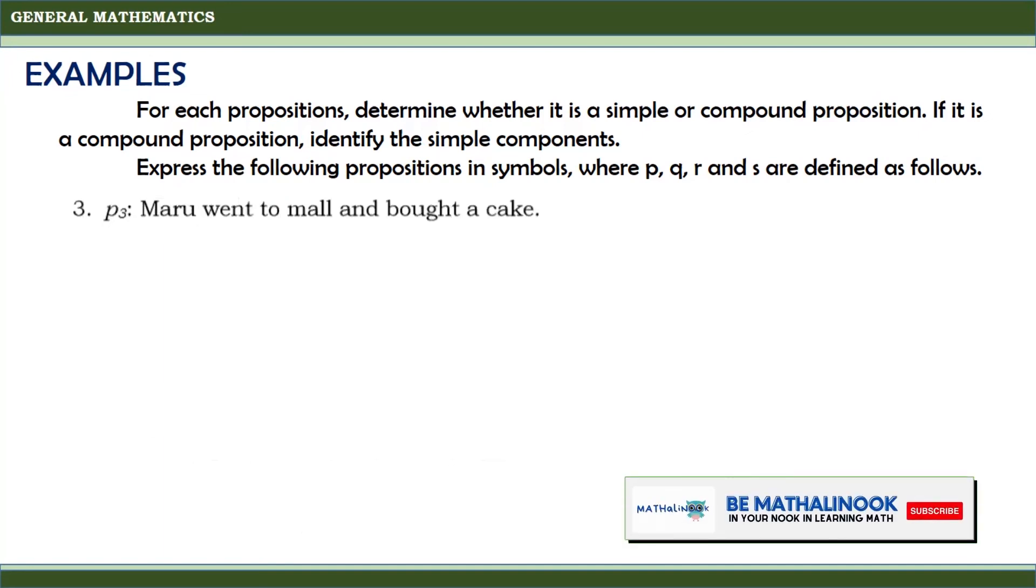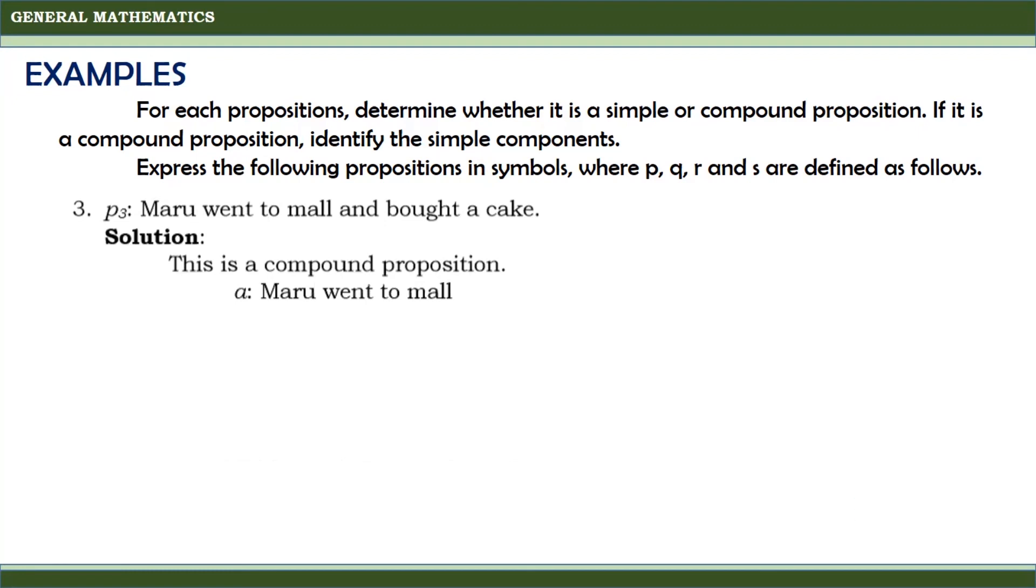Another example. Maru went to mall and bought a cake. This is also a compound proposition. Proposition A, Maru went to mall. Proposition B, Maru bought a cake. Since it is combined by AND, then the compound proposition is in the form A and B.